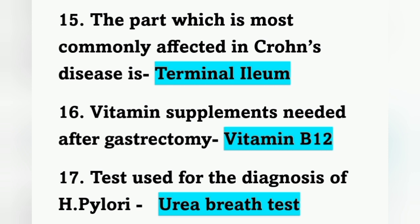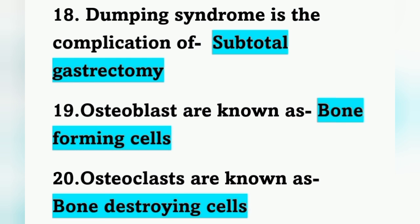The test used for diagnosis of H. pylori is the urea breath test. Helicobacter pylori is the organism which causes peptic ulcer. Next: dumping syndrome is the complication of subtotal gastrectomy. Dumping syndrome means rapid emptying of the gastric content into the small intestine; it mainly occurs after gastric resection.